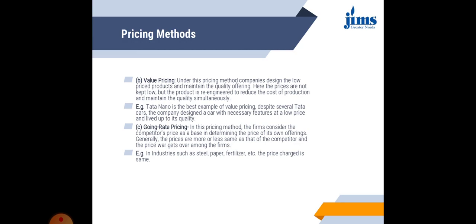Next is going rate pricing. Here, the firm considers the competitor's price as the base. Whatever price the competitor is charging for the same kind of product in the market, the organization fixes its own price by looking at that — either the same as, slightly lesser than, or slightly higher than the competitor's price. Examples of industries using going rate pricing include steel, paper, and fertilizers.